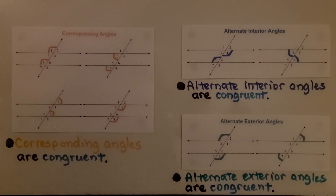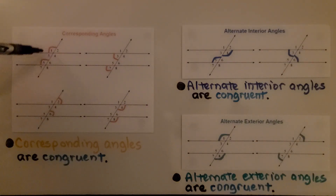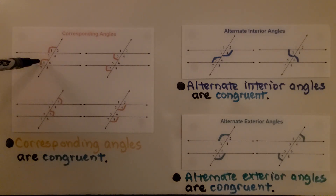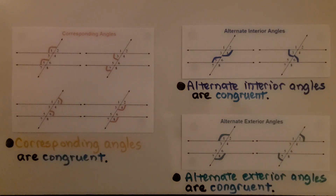Here we have corresponding angles. Angle one and angle five are corresponding angles, and corresponding angles are congruent. If we measured angle one and measured angle five, they would be congruent.